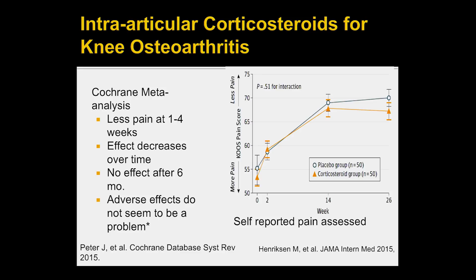Intra-articular cortisone injections for knee OA do seem to work — for pain and for a short period of time. In this meta-analysis of many studies, the most optimal effect was at about one month; it didn't last long. A recent JAMA study discussed cartilage changes with cortisone. We still use this judiciously. We don't think there are really strong adverse effects, and it's a mainstay to keep people in less pain and moving.